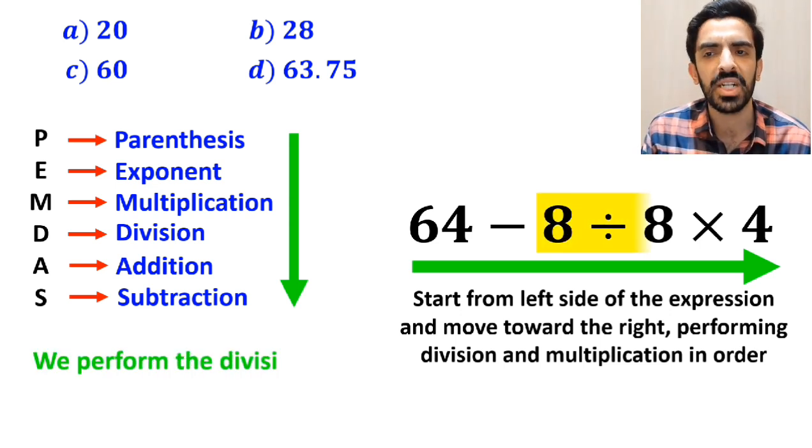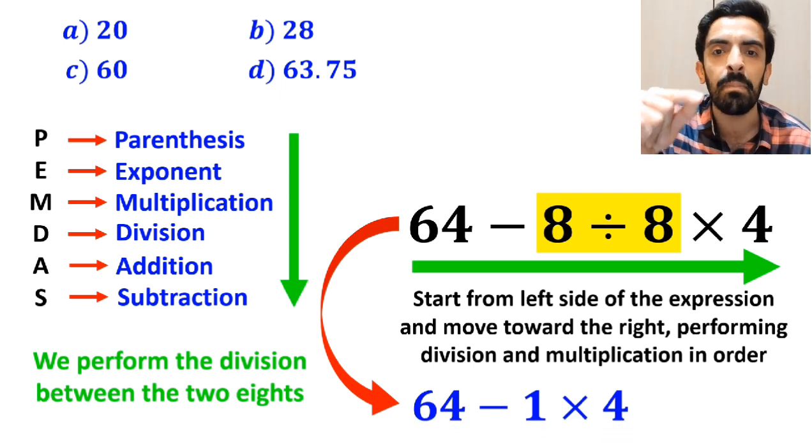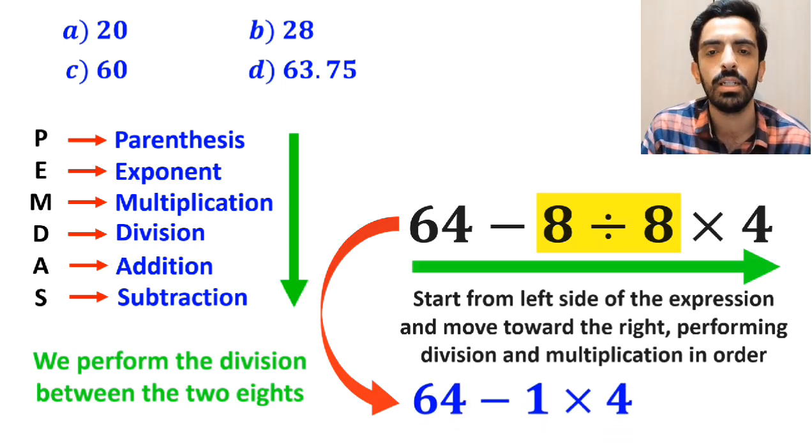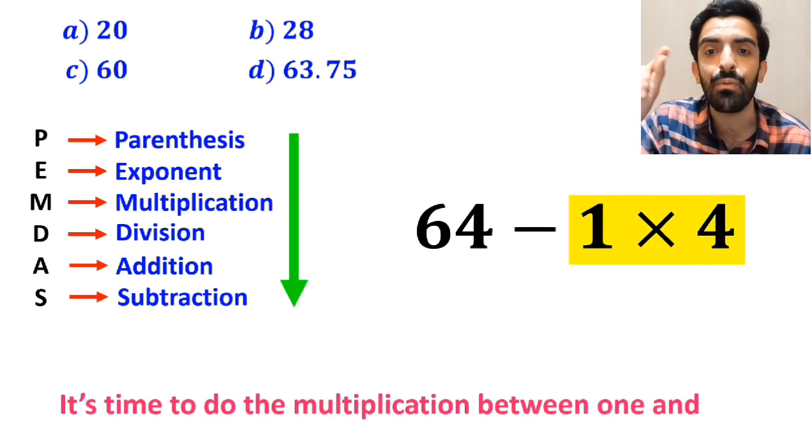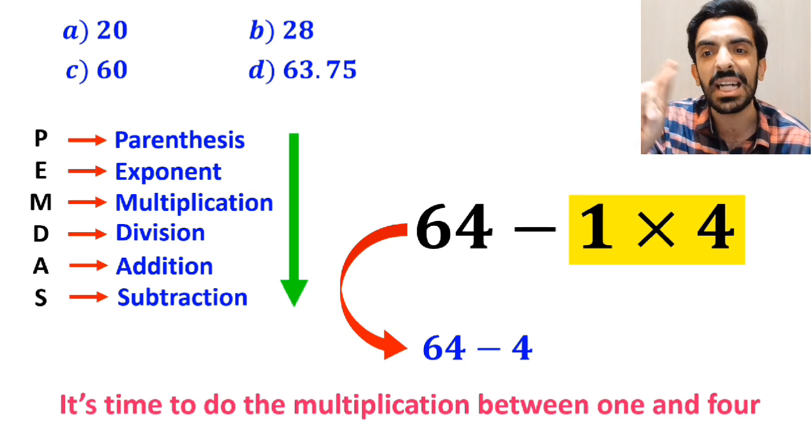So, first we perform the division between the two eights, and this expression simplifies to 64 minus 1 then times 4. Now, it's time to do the multiplication between 1 and 4, which gives us 64 minus 4.